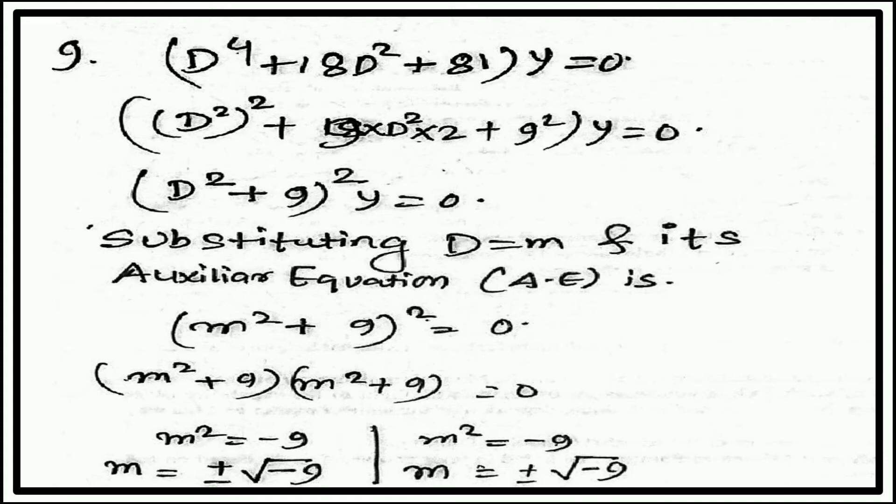Question 9: D to the power 4 plus 18D square plus 81 into y equal to 0. This time we have to factorize: (D⁴ plus 18D² plus 81)y equal to 0.